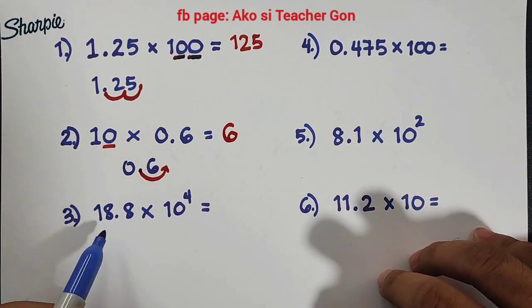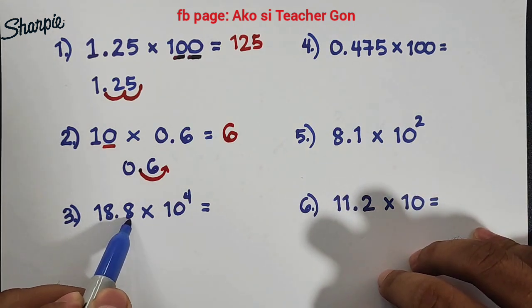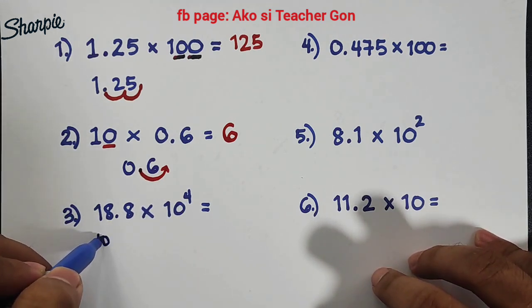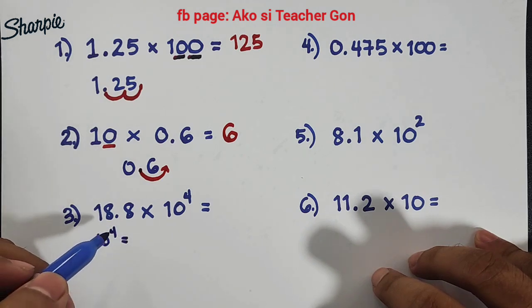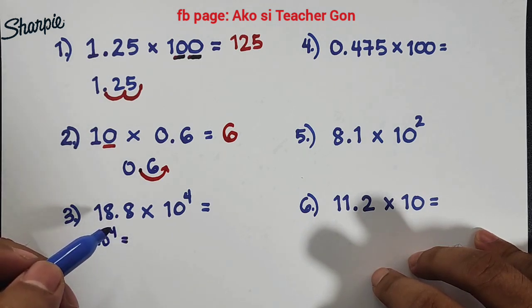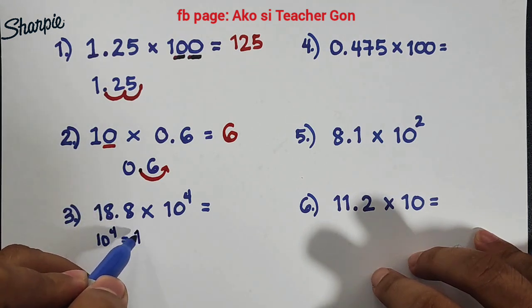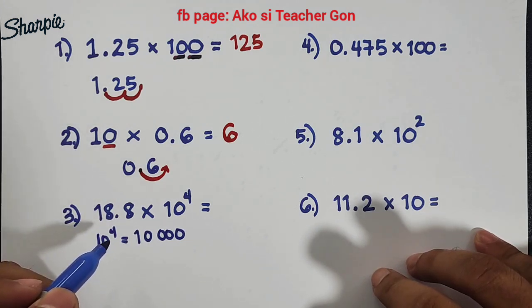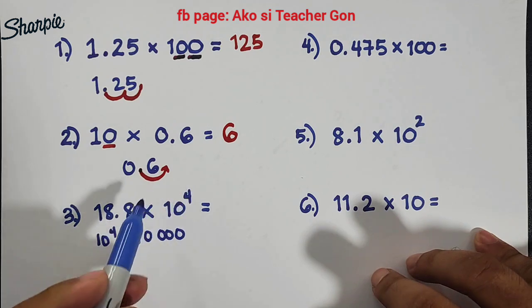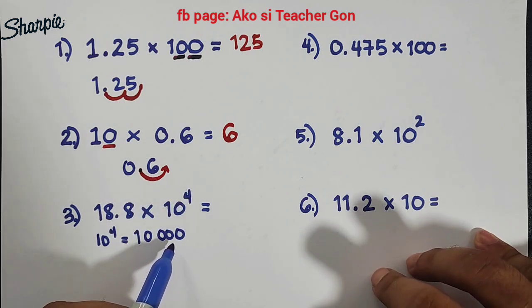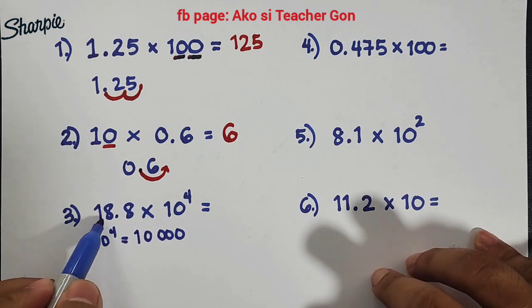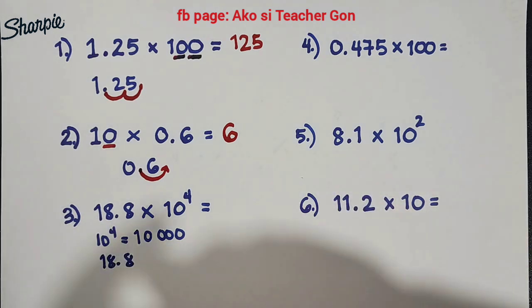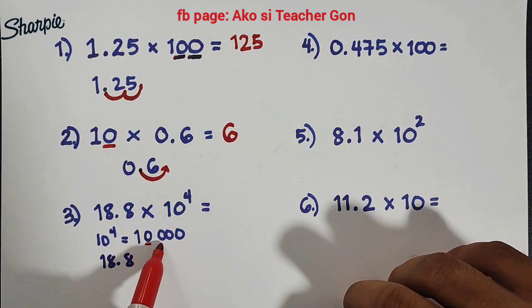Now let's move on with item number 3. In number 3, we have 18.8 times 10 raised to the 4th power. When you say 10 raised to the 4th power, that is equivalent to 10,000. If you have an exponent of 4, you have 4 different zeros. So we take 18.8 and will move 4 decimal places — 1, 2, 3, and 4.